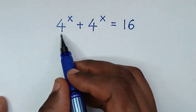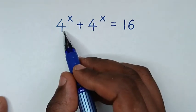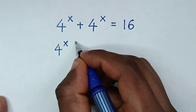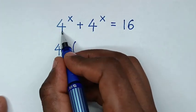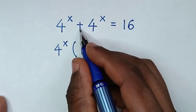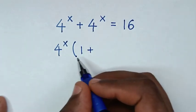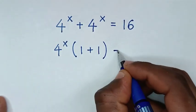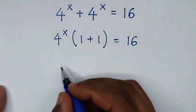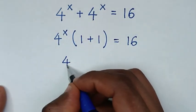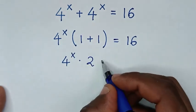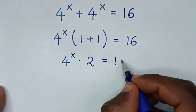Now in the first step, from the left side, 4 power x is common. So we take 4 power x out of the bracket. Then 4 power x divided by 4 power x is 1, plus 4 power x divided by 4 power x is 1, in brackets, is equal to 16. Then it will be 4 power x times 1 plus 1 — which is 2 — is equal to 16.